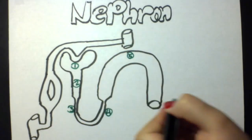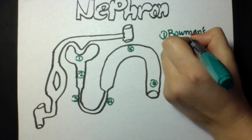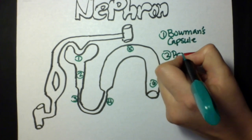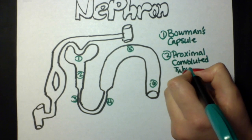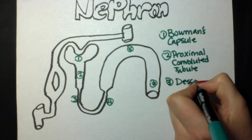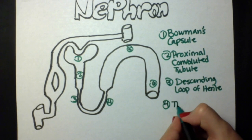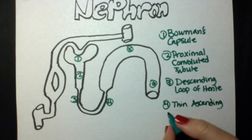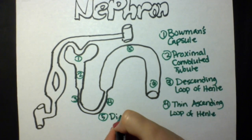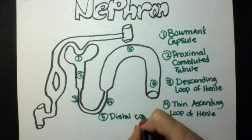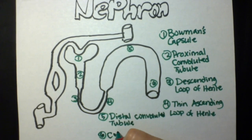As the filtrate moves down the Bowman's capsule, it goes into the proximal convoluted tubule where most of the reabsorption and secretion occurs. As the filtrate moves, it goes down into the descending loop of Henle and up the thin ascending loop of Henle and thick ascending loop of Henle, going into the distal convoluted tubule and eventually collecting in the collecting duct.